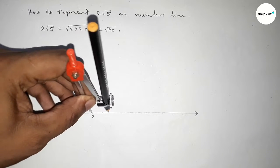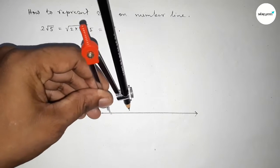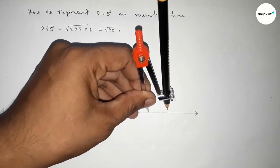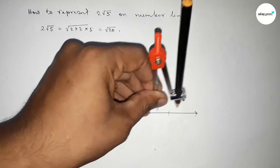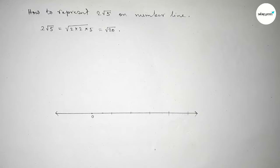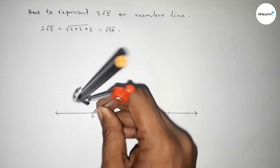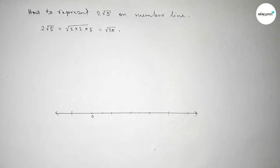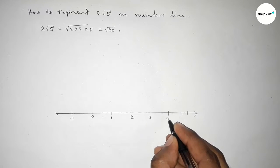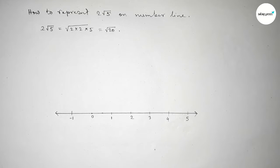By using compass, taking any length and mark here. First we have to mark the numbers on the line by using compass, or you can use scale to mark the numbers on the line. Taking here point -1, here 1, 2, 3, 4, 5.